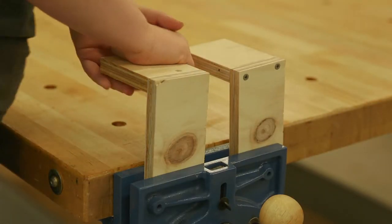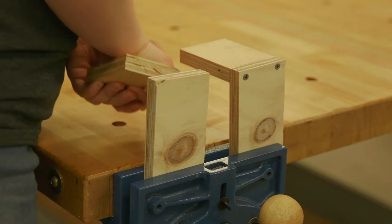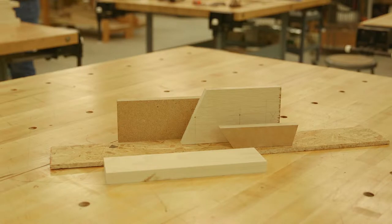A butt joint is typically used for joining two pieces of material where the joint will not be under significant stress. The butt joint can be used with wood or other wood-like products like MDF, plywood, or particle board.